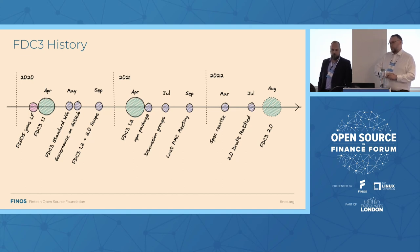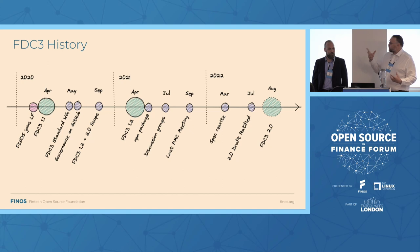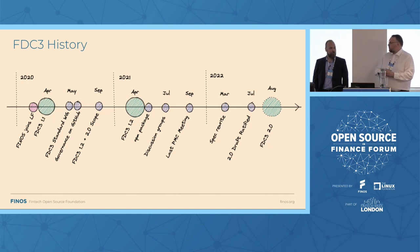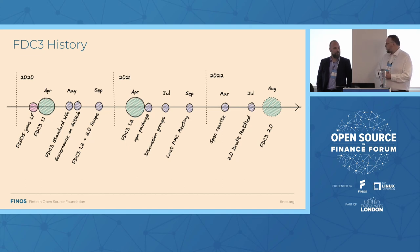Working on FDC3 2.0 turned out to be really hard — there were lots of big things, lots of discussion, contradiction, different opinions about how we should do things. That's when we realized we needed to start discussion groups for different topics in FDC3 to tackle all of them, but then bring it back to the standard working group to make the decisions. We also started a spec rewrite. Long story short, we're at the point now where we have the 2.0 draft. It's loads of work — it's by far our biggest release ever.